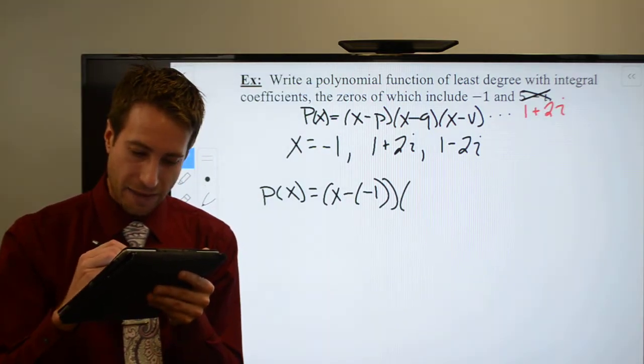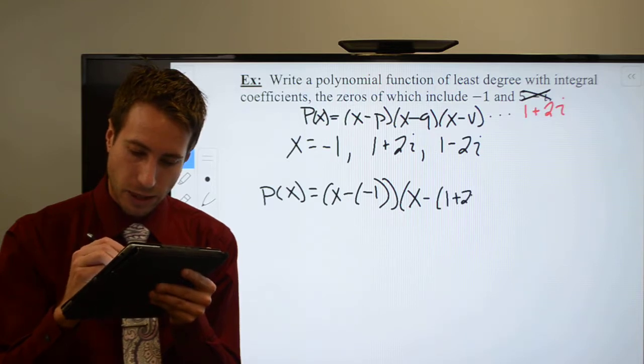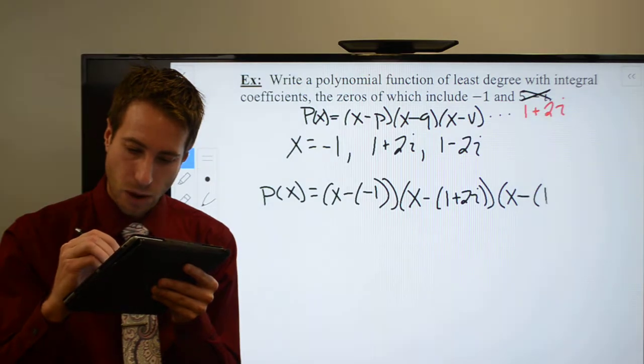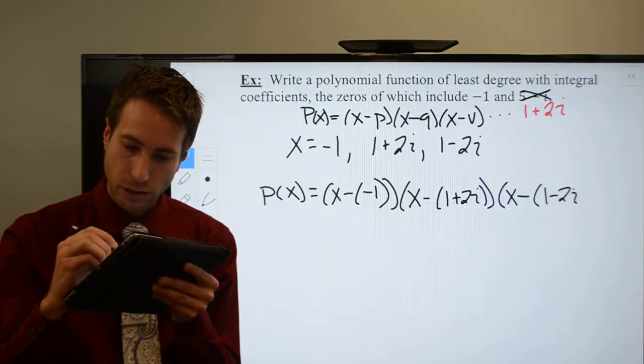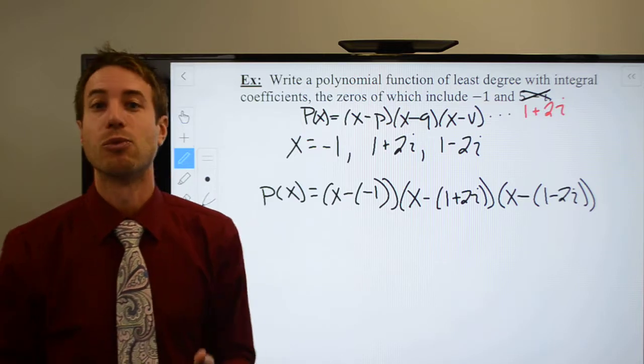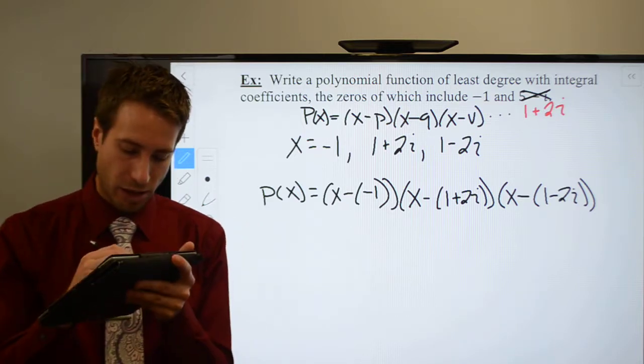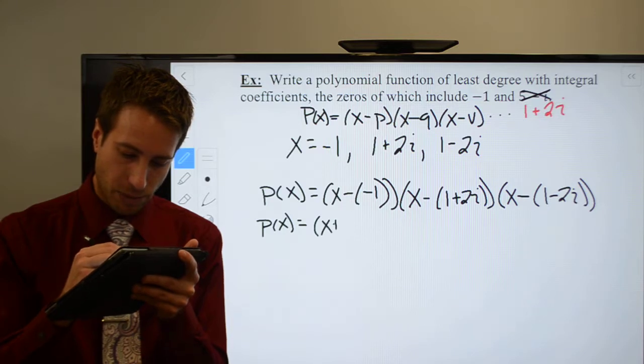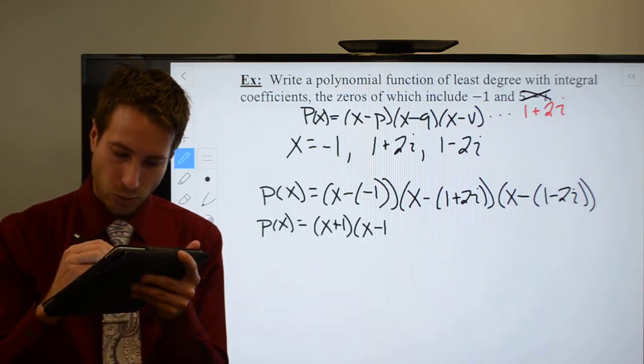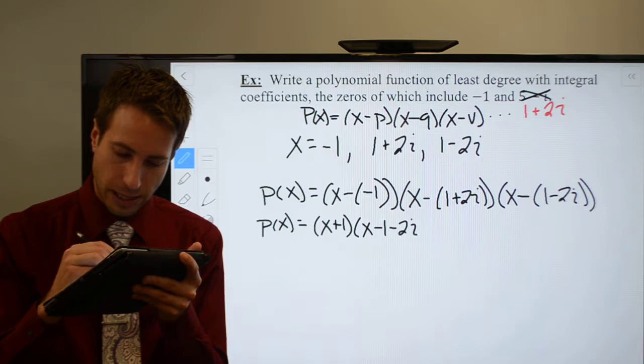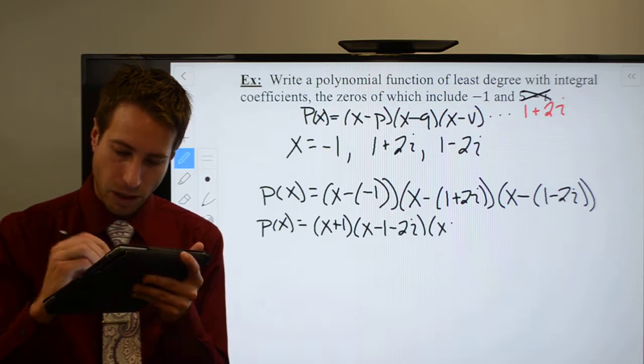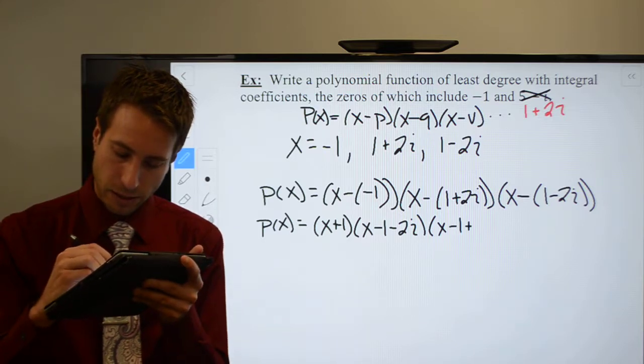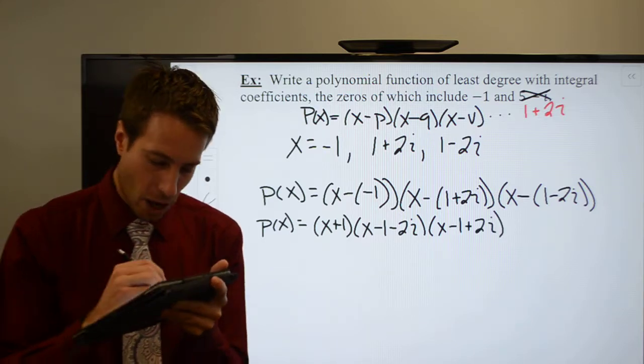And then I'm going to have x minus 1 plus 2i, and then I'm going to have x minus 1 minus 2i. Let's go ahead and distribute our minus signs, and then we'll actually get to the distributive part. So p of x, it's going to be x plus 1, x minus 1 minus 2i, and x minus 1 plus 2i. All right, here we go.